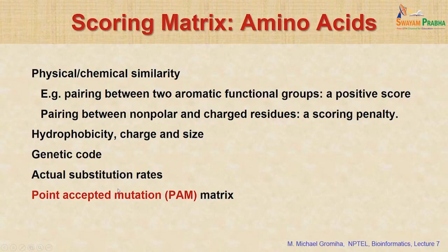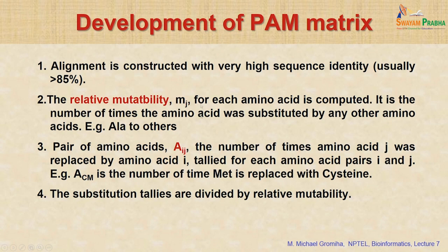This matrix is called the Point Accepted Mutation (PAM) matrix. For example, if you have 100 amino acid residues and 90 are the same, there are 10 percent variations — 90 percent are similar. We look at what those 10 variations are and what substitutions they represent. We first take alignments at high sequence identity, say more than 95 percent.